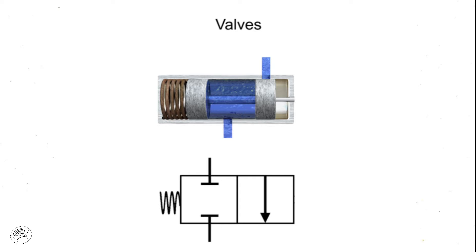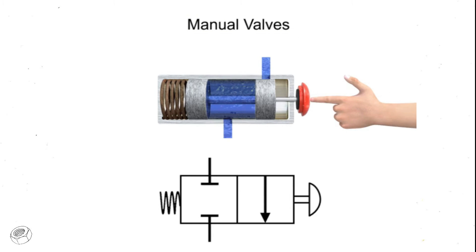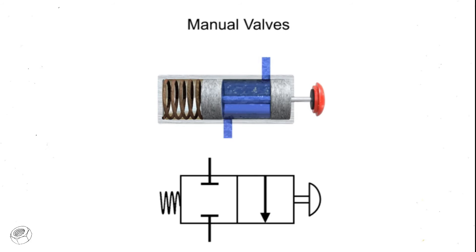Control valves for these functions can be purchased with either manual or solenoid actuators. In a manually actuated valve, the internal cylinder is shifted by hand using a lever, push button, plunger, or other manual actuating device.